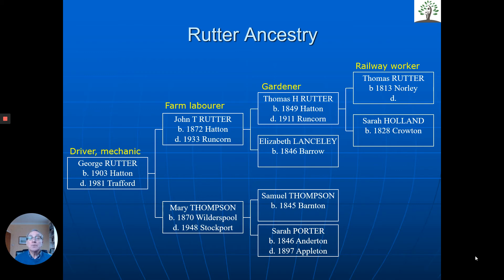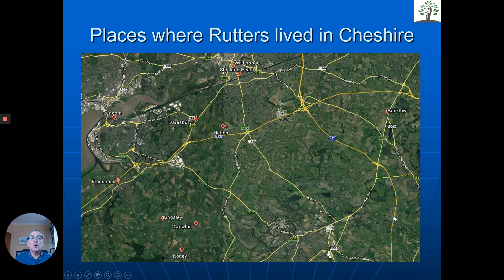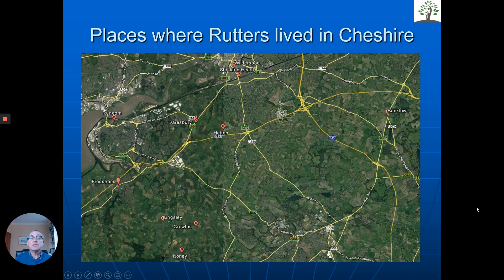One of the obvious things to do is find out where these places were and help you, if it's your ancestors, to locate where they lived and hopefully walk in their footsteps. We use a Google Earth map to plot where the various places people lived are. Here we have Croughton and Norley, Hatton a few miles away, and Wilderspool. All the places the Rutters lived, particularly in the 19th century and into the 20th century. One can actually go to these places — many of them are still there — and genuinely walk in your ancestors' footsteps.